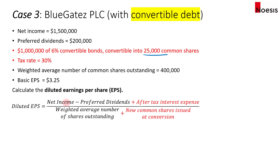For the formula, in the numerator we have net income minus preferred dividends, plus after-tax interest expense. This is to reverse out the interest from the convertible debt in the case where the debt is converted into common shares — if converted, no interest has to be paid. In the denominator, we add in the new common shares issued at the conversion of the convertible debt.